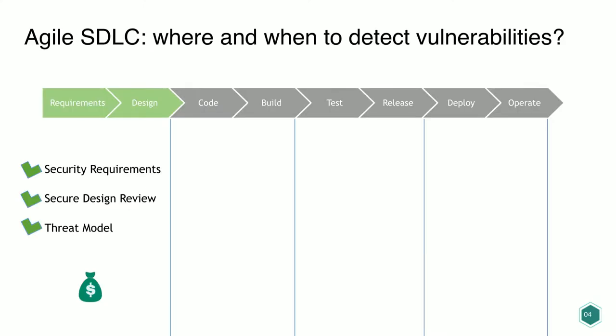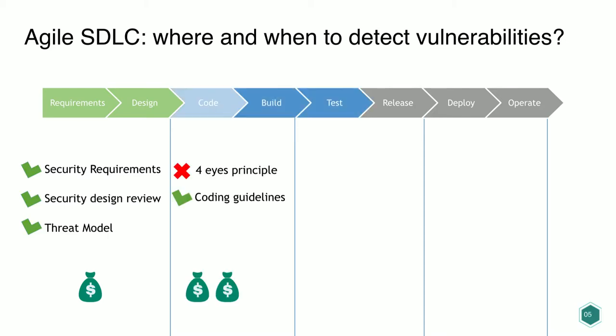Considering the agile SDLC, when is the best place to detect vulnerabilities? We want to detect them as soon as possible — during the requirements and design phase through security requirements, secure design review, and threat modeling. At that stage it's cheap, represented by one bag of money. Moving to the code and build phase is already more expensive.